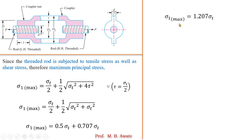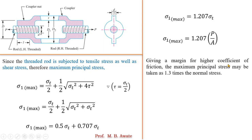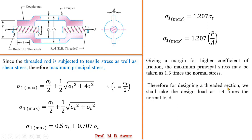The threaded rod is subjected to both tensile force and shear stress, so the maximum principal stress applies: sigma_1 = sigma_t/2 + (1/2) × sqrt(sigma_t² + 4 × tau²). Substituting tau = sigma_t/2, and simplifying, gives sigma_1_max = 1.207 × sigma_t. Giving a margin for higher coefficient of friction, the maximum principal stress may be taken as 1.3 times the normal stress. Therefore the design load PD = 1.3 × P, where PD is the design load and P is the normal load.